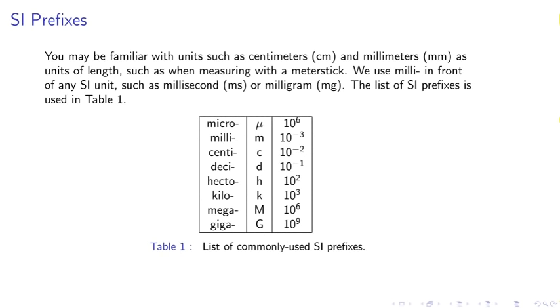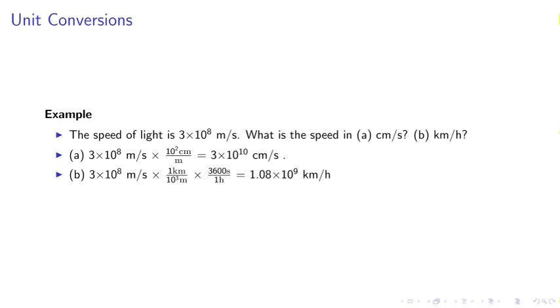SI prefixes. You may be familiar with the unit such as centimeters, millimeters as units of length, such as measuring with a meter stick. We use milli in front of any SI unit such as millisecond or milligram. The list of SI prefixes is in table 1. We see milli, which is 10 to the minus 3. Micro, which is 10 to the minus 6. Kilo is 10 to the 3rd.